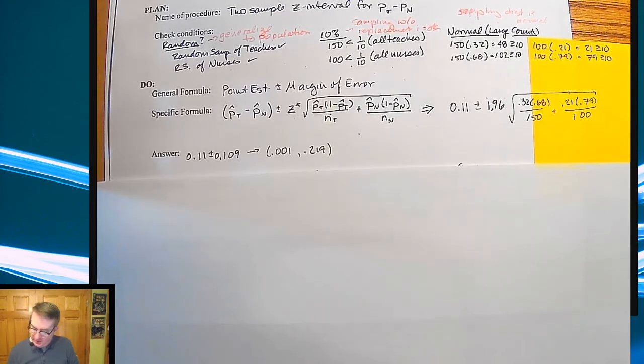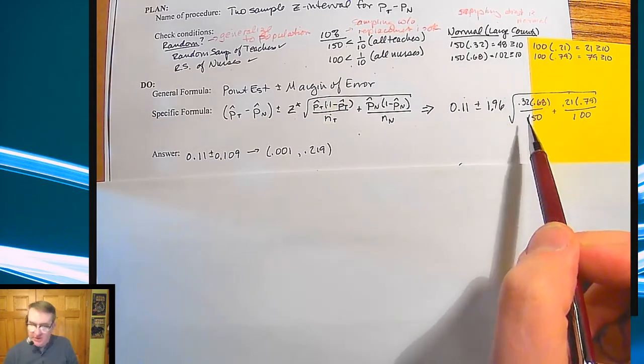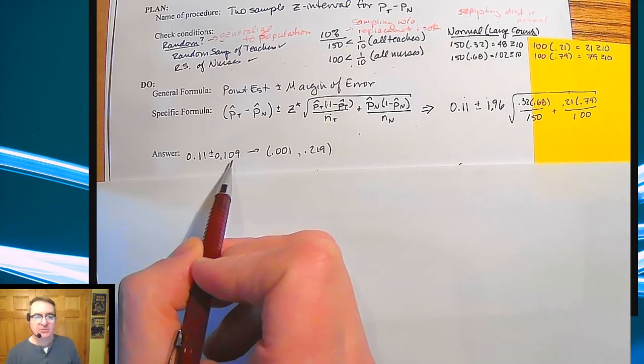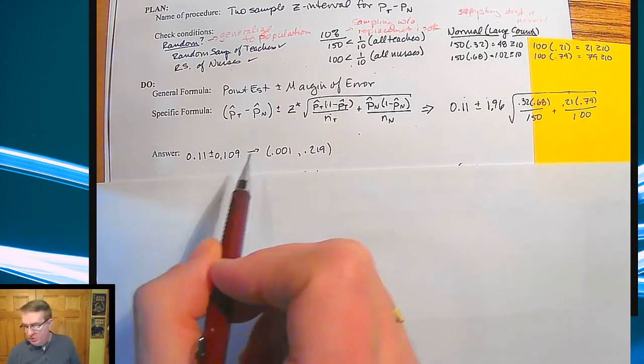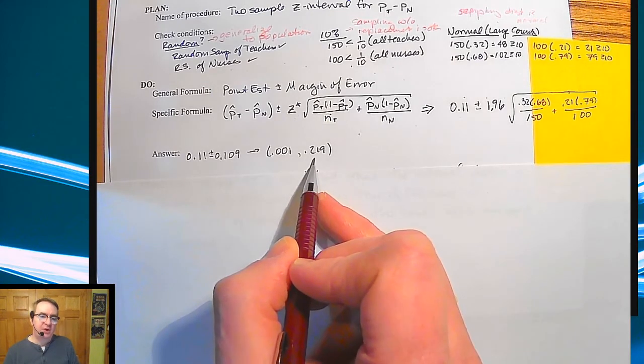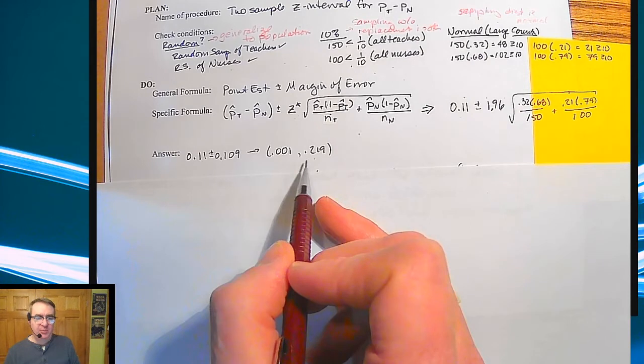We do all the math. This whole big thing over here turns out to be 109 thousandths or 0.109, about just about 11%. So when we do the plus minus here, notice we're going anywhere from 0.001 to 0.219.